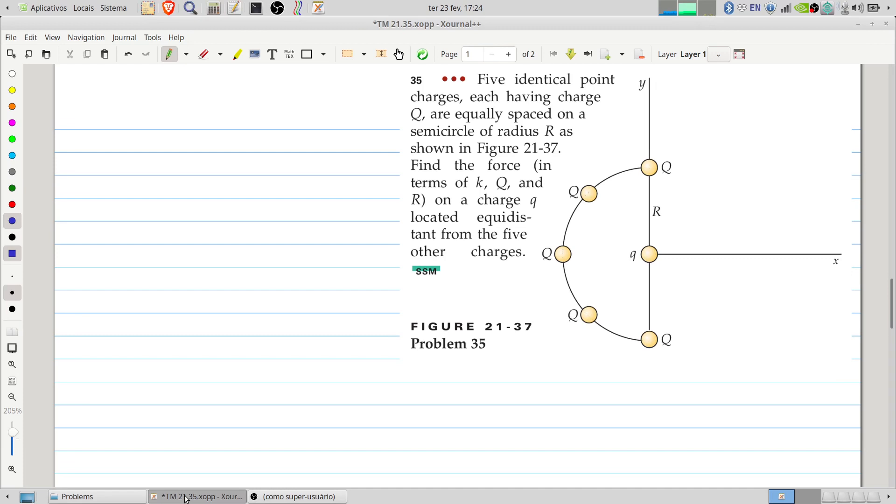Five identical point charges, each having charge q, are equally spaced on a semicircle of radius r, as shown in the figure here. Find the force on a charge q located at a distance from the five other charges.